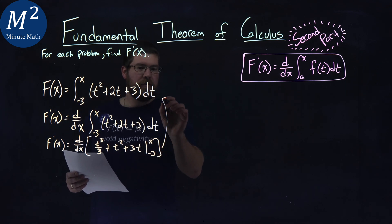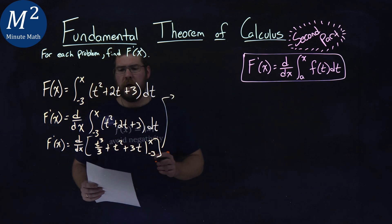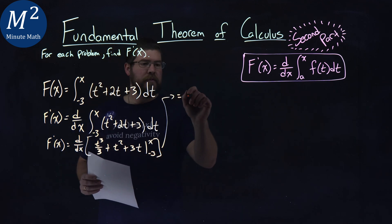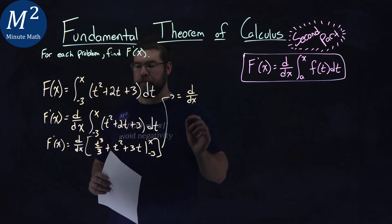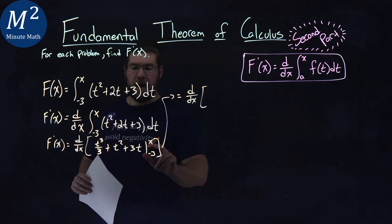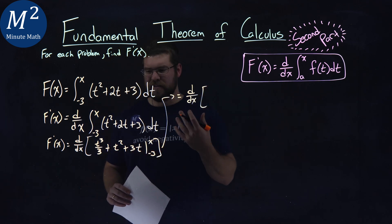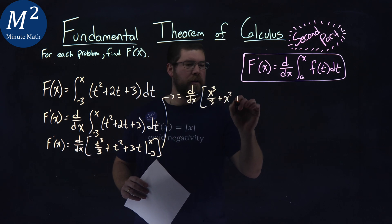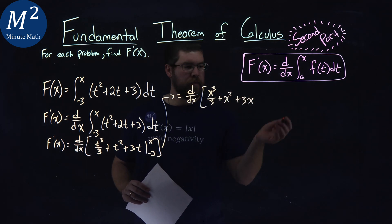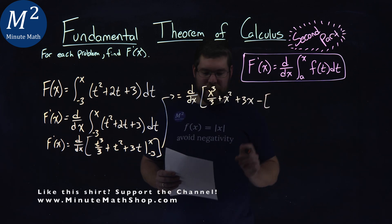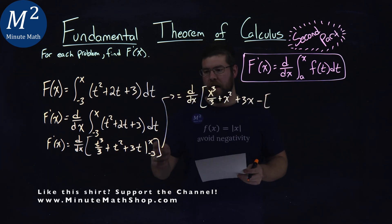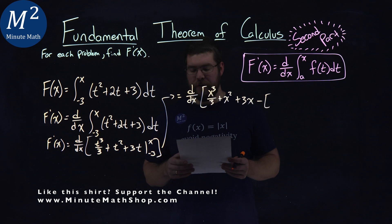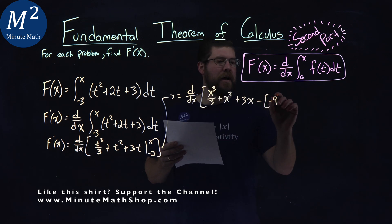So from here, I'm going to put it up here so it's a little easier to see. We still have d over dx. What we need to do is plug in x first for t, so it kind of swaps it out: x to the third over 3 plus x squared plus 3x. Then we subtract when we plug negative 3 in for t, and that comes out to be negative 9.